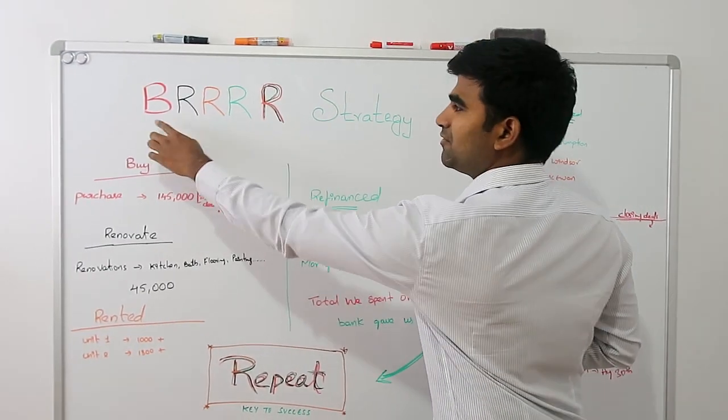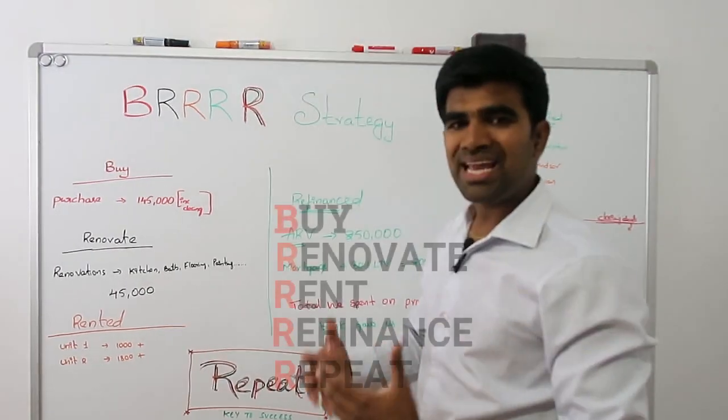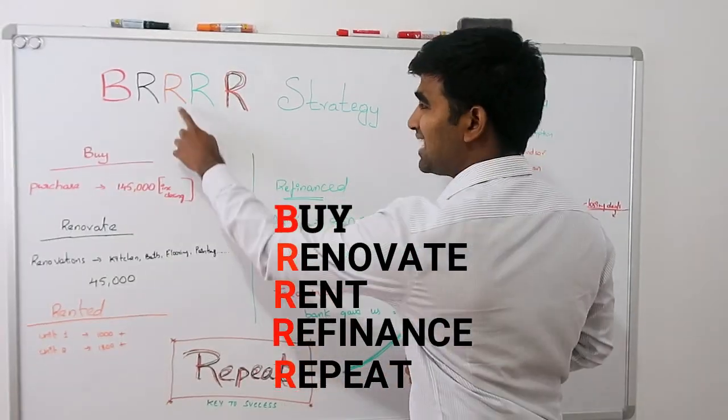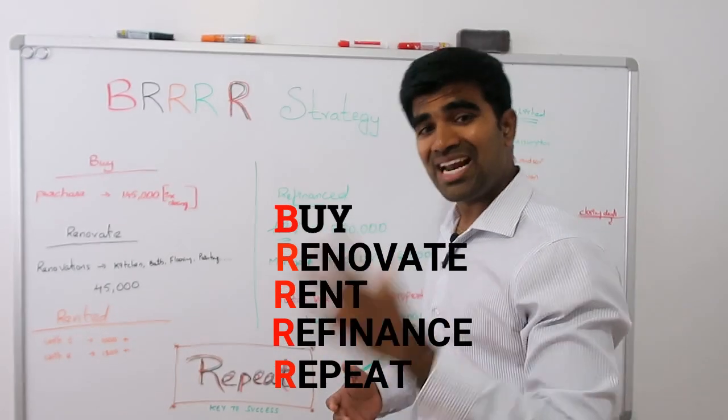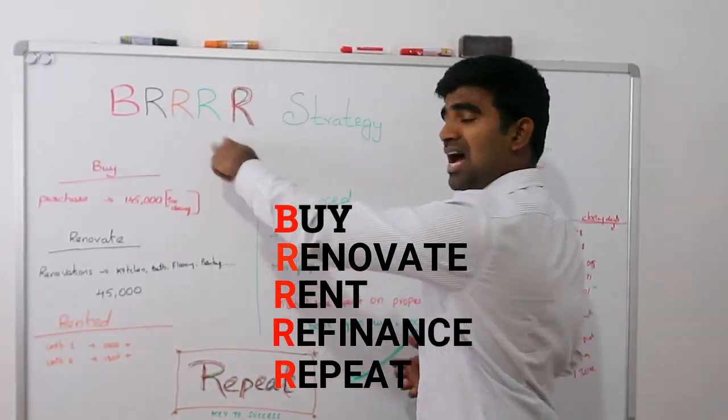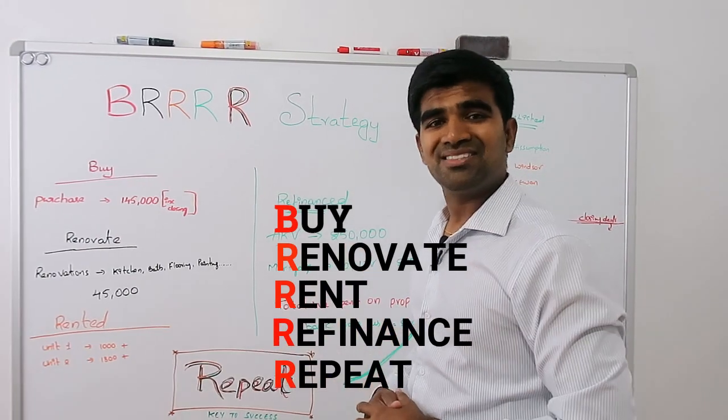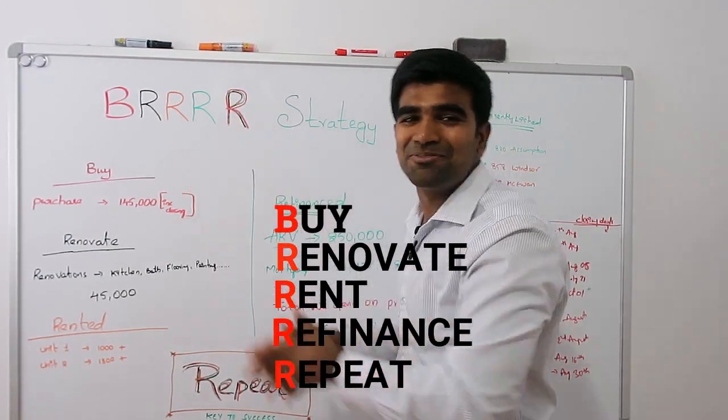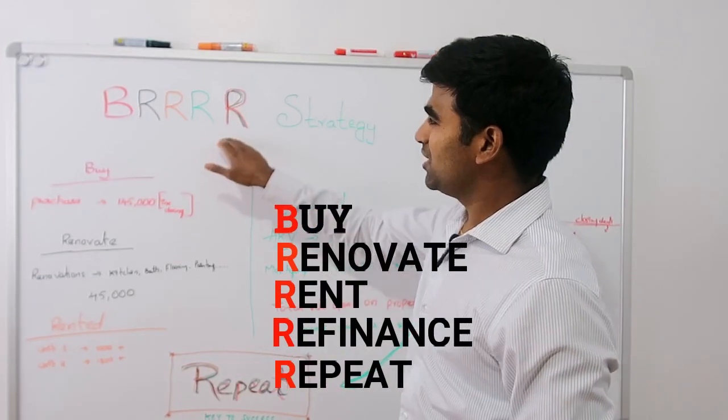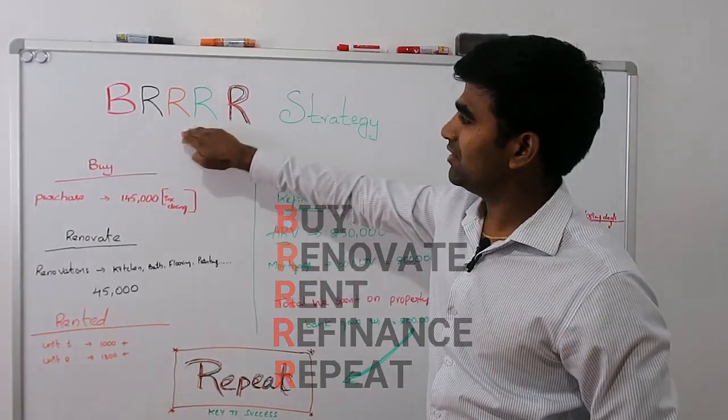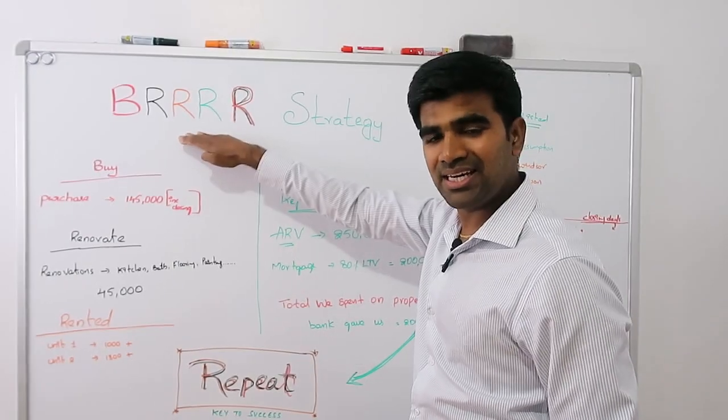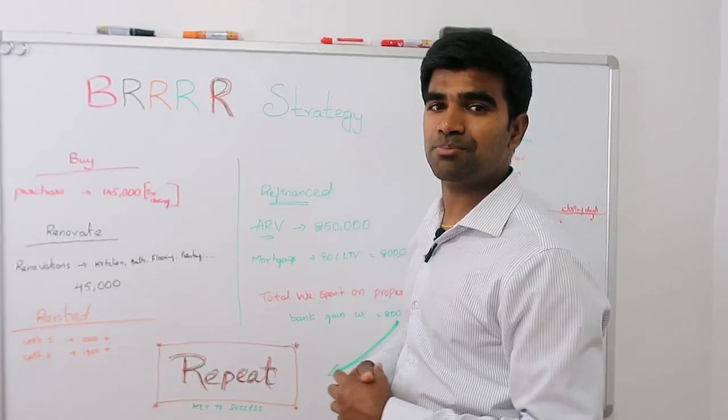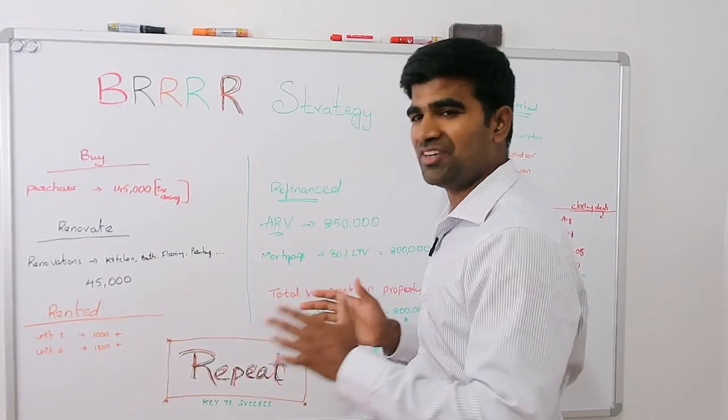First, B stands for BUY - buying a property. R stands for do renovations on that property. Another R stands for rent that property. Another R stands for refinance that property. And last R stands for repeat. I have put a lot of R's because once you apply these four lines clearly, you're going to have your money to repeat the process. That's the concept of BRRRR strategy.